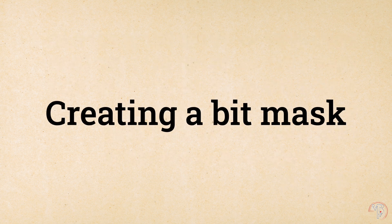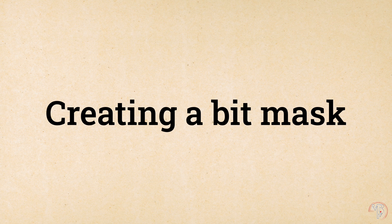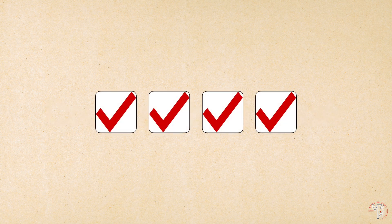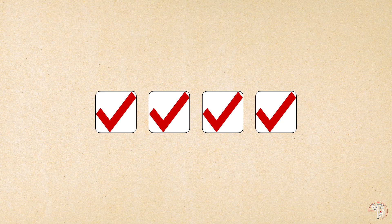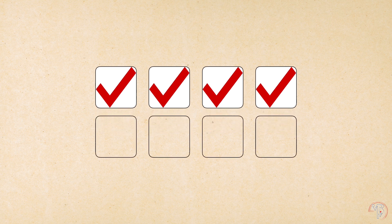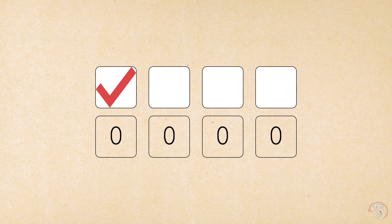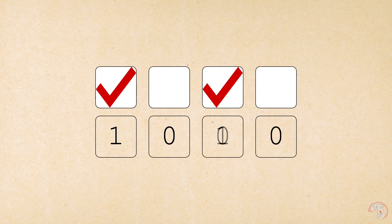To understand what a bit mask is, let's look at this list of checkboxes. We can store the value of all checkboxes by using just one binary sequence consisting of four bits. If all checkboxes are off, all four bits are set to zero. If the first checkbox is on, the first bit is set to one. If the third checkbox is checked, the third bit is set to one, and so on.